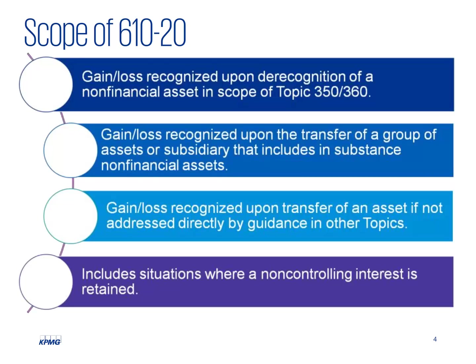The proposed changes will clarify the scope of Subtopic 610-20 so that entities will apply its guidance to both transfers of non-financial assets as well as any group of assets or subsidiary that includes an in-substance non-financial asset. It is worth noting that current GAAP real estate guidance includes a concept of in-substance real estate; however, determining if a transaction includes an in-substance non-financial asset will be a new concept. The proposal also addresses how to account for transfers in the scope of 610-20 that result in the seller retaining a non-controlling interest in the transferred non-financial asset.